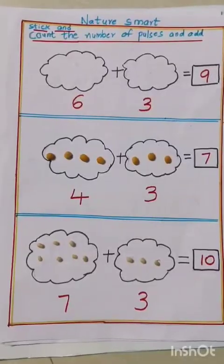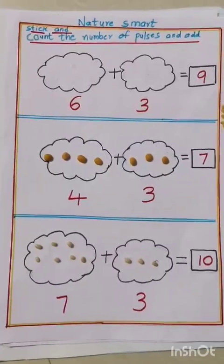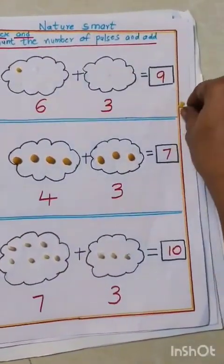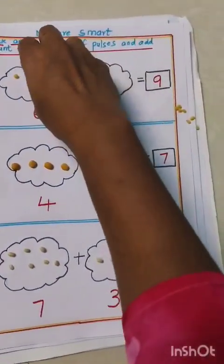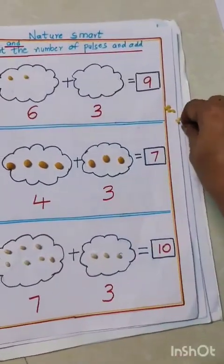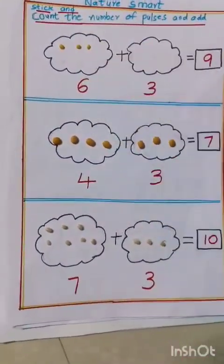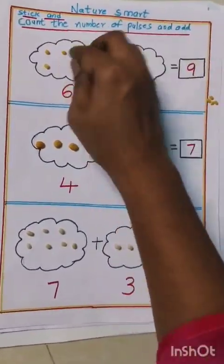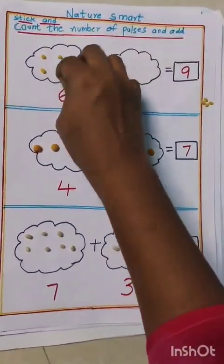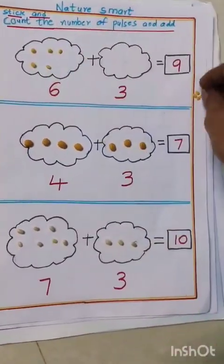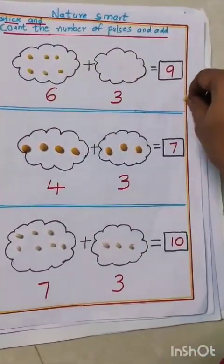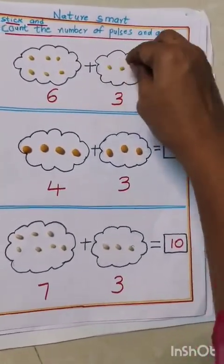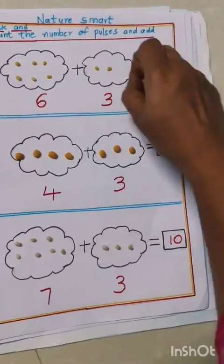Stick and count the number of objects and add. One, two, three, four, five, six, seven, eight, nine.